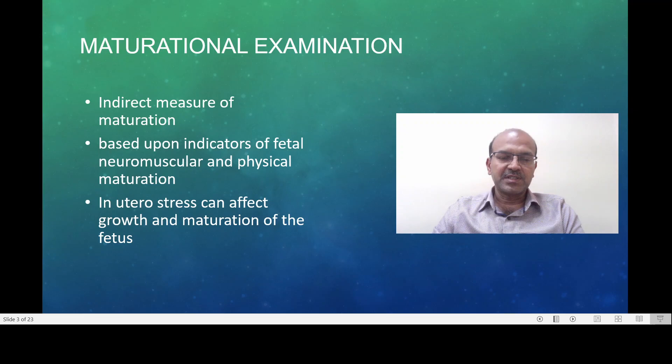For example, a condition which affects the baby to be growth restricted accelerates the maturation. So the growth is low but the maturation is faster. And a condition like gestational diabetes which causes the baby to be large may actually slow down the maturation. We can see that in terms of the lung as well as the neurological system in a gestational diabetic mother.